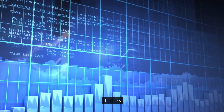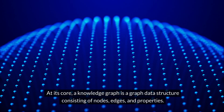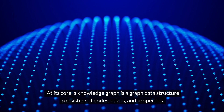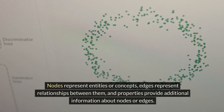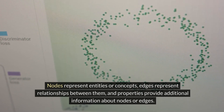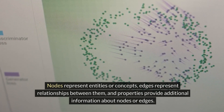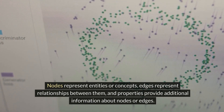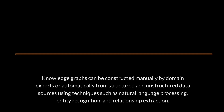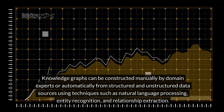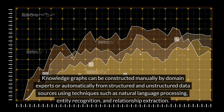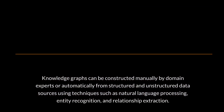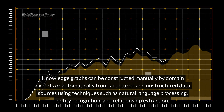Theory. At its core, a knowledge graph is a graph data structure consisting of nodes, edges, and properties. Nodes represent entities or concepts, edges represent relationships between them, and properties provide additional information about nodes or edges. Knowledge graphs can be constructed manually by domain experts or automatically from structured and unstructured data sources using techniques such as natural language processing, entity recognition, and relationship extraction.